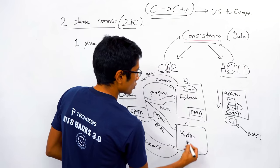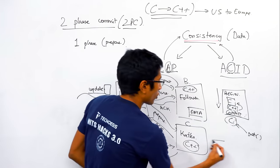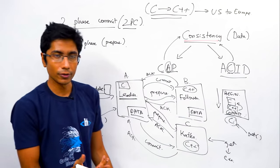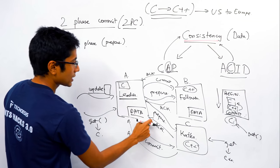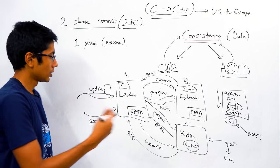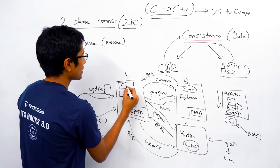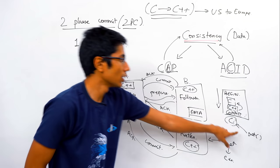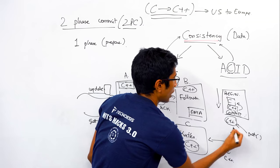Assuming the commit went through properly, C++ is reflected everywhere. If someone does a get operation now, they get C++, which is exactly what you wanted. Before sending commits to followers, the leader first commits to its own database. So locally it's C++, and once the commit message reaches the follower, they also reflect C++.